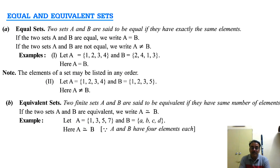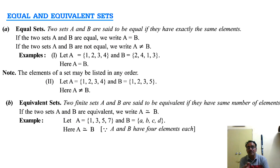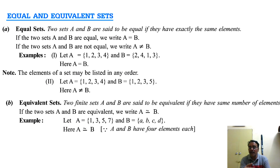Another important type is equivalent sets. Two finite sets A and B are said to be equivalent if they have the same number of elements — that is, the same order. For example, A = {1, 3, 5, 7} and B = {A, B, C, D}. Both sets have 4 elements each, so A and B are equivalent.